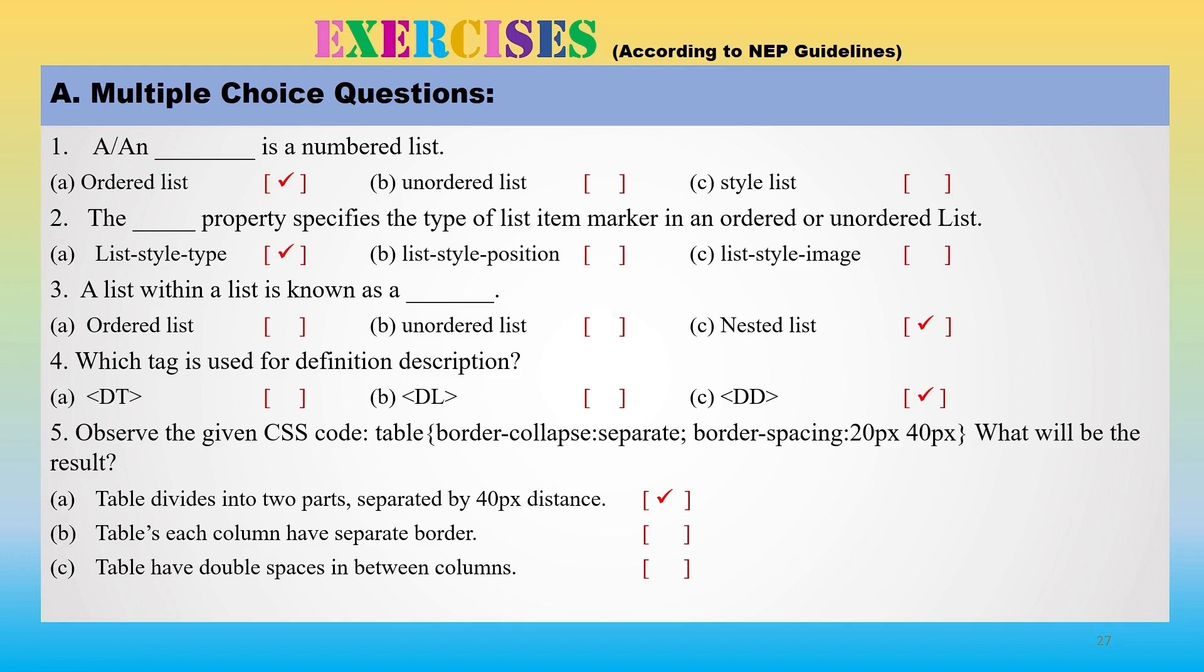This is also an example of nested list. So the first question: an ordered list is a numbered list, numbered list means ordered list. The property specifies the type of list item marker in ordered or unordered list. So the answer will be list-style-type. The list style attributes are related to both ordered and unordered lists, we can use them with both types.